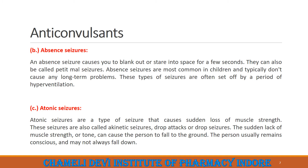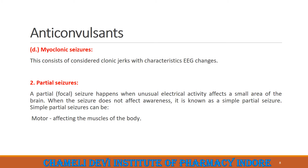Atonic seizures are types of seizures that cause sudden loss of muscle strength. These seizures are also called akinetic seizures, drop attacks, and drop seizures. The sudden lack of muscle strength or tone can cause the person to fall to the ground; the person usually remains conscious and may not always fall down. Myoclonic seizures consist of clonic jerks with characteristic EEG (electroencephalogram) changes, a type of diagnostic test which measures brain activity.